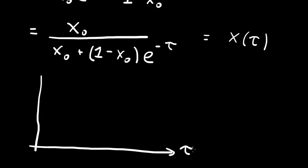If we draw a graph of this solution to the logistic equation, this is τ and this is x. If we start at a relatively small value of x down here, we'll have initially exponential growth because we satisfy Malthus' equation.